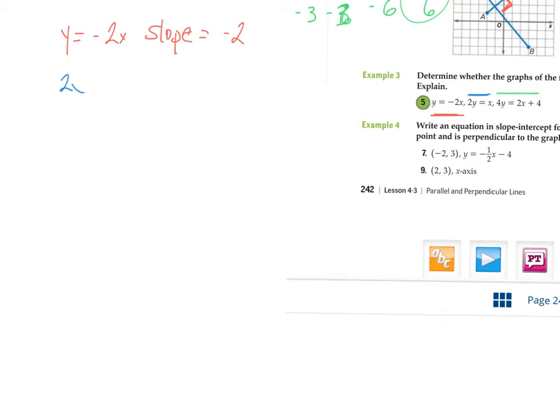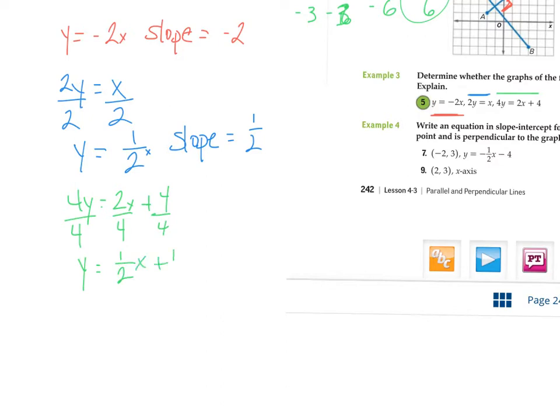Look at the next one, two y equals x. Again, put this in slope intercept form just like the red one, divide by two, divide by two. This one is y equals x over two or one half x. So this has a slope of positive one half. And our last line is four y equals two x plus four. So again, solve for y. Divide by four, divide by four, divide by four. Y equals one half x plus one.